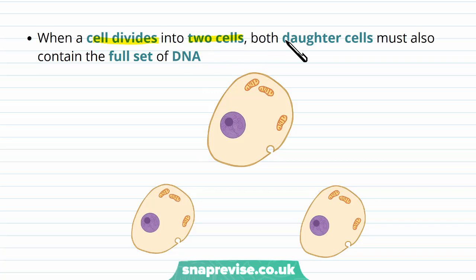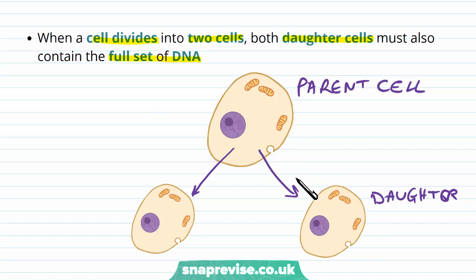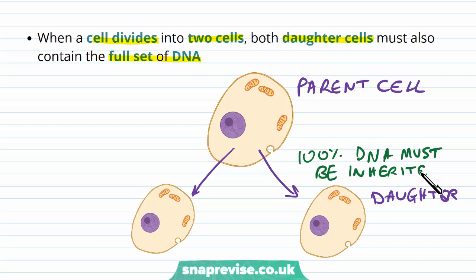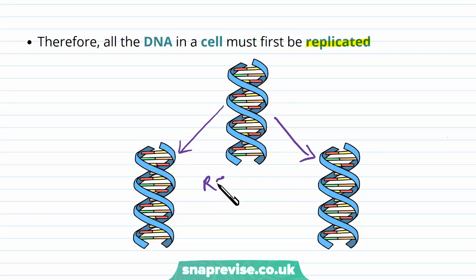Whenever a cell divides into two new daughter cells, both must contain the full set of DNA. We start with a parent cell, and both daughter cells made during mitosis must each have a set of DNA. Otherwise, you'd be missing DNA at each generation of mitosis, and cells down the line would end up with only a fraction of the complete set of instructions. It's almost like trying to sell a piece of furniture with an incomplete instruction manual — if you didn't give them all the pages, they couldn't use the whole piece of equipment. So all the DNA must be inherited, meaning it has to be replicated — the original cell keeps its copy, and the new cells must have some as well.